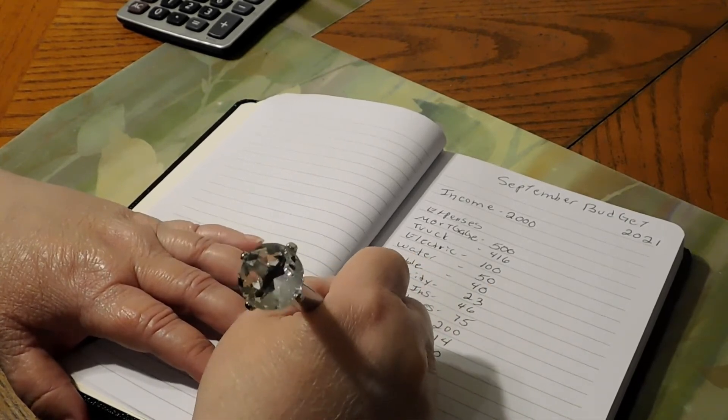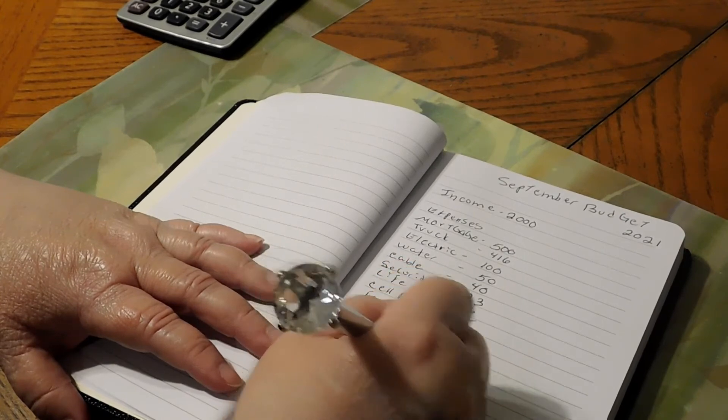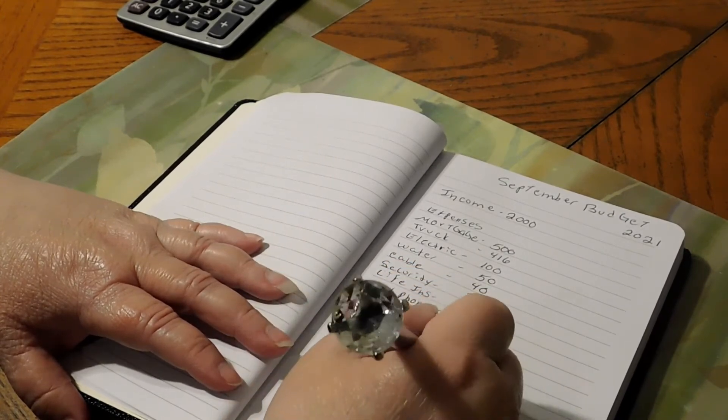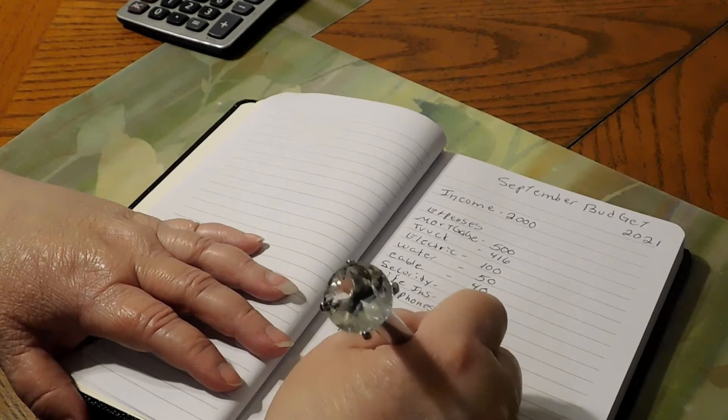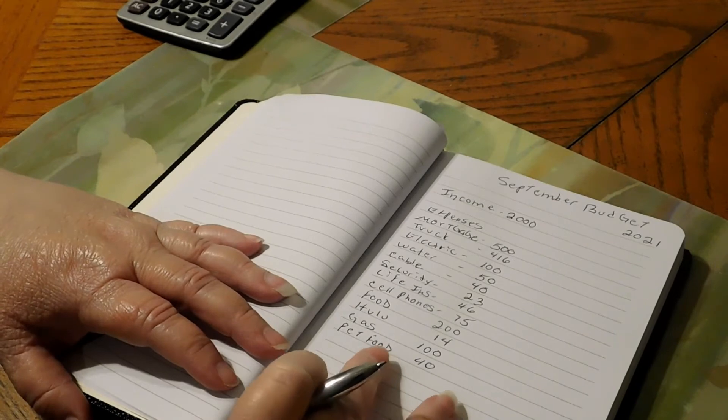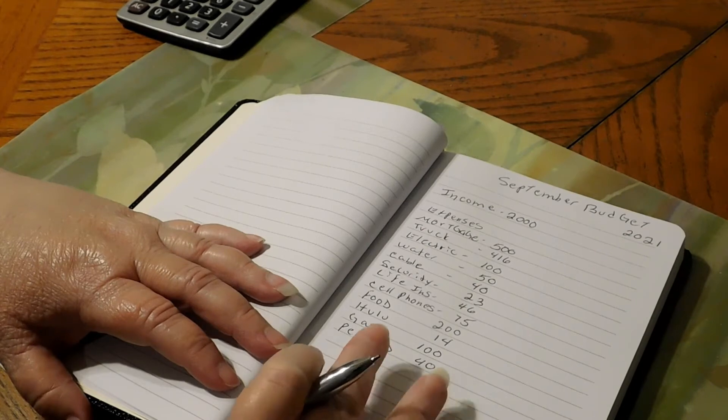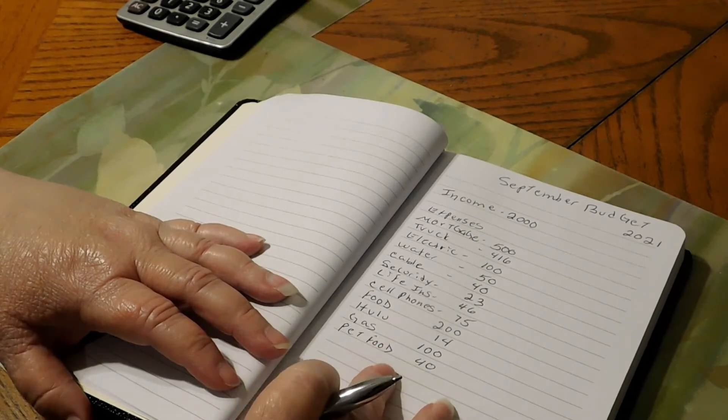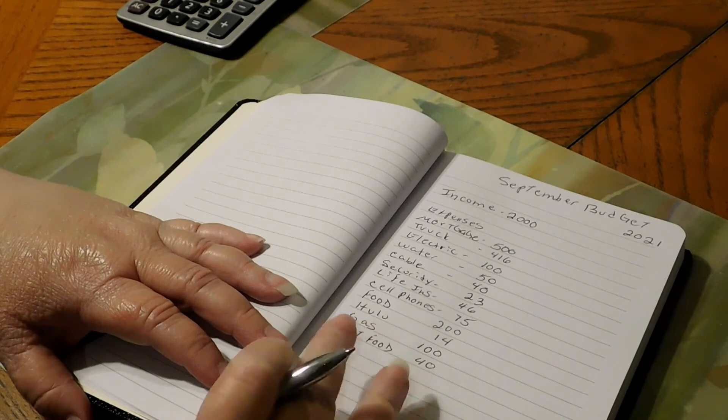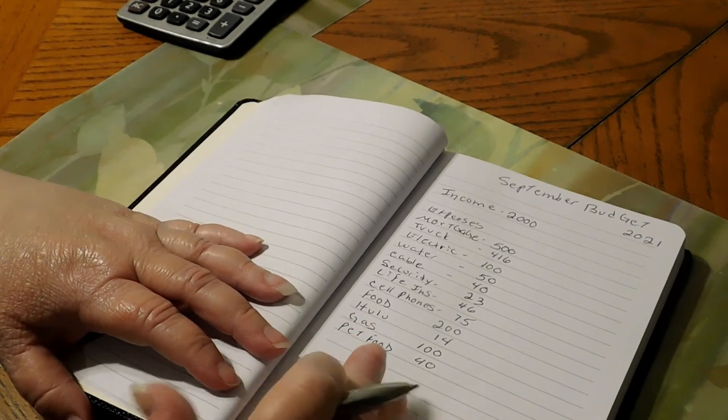Pet food is getting $40. I bumped this down from $50 to $40 because they haven't really been going through all of the $50. So I bumped it down to $40 for the month. $10 a week. I can get quite a bit of cat food for $10 a week for the cats.